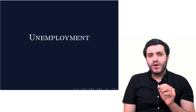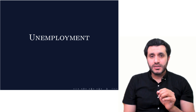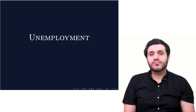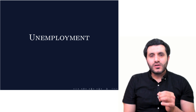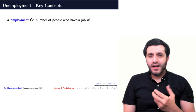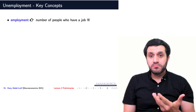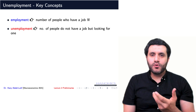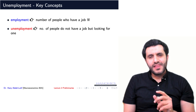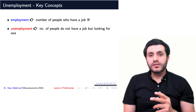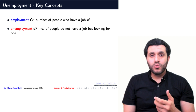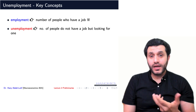First, we need to highlight a few related concepts to understand how to calculate the unemployment rate. One of these concepts is employment, which is the number of people who have jobs, denoted as N. How about unemployment? Does it refer to those who do not have jobs? That might not be very accurate. Why? Because there could be some people who choose not to work or cannot work.